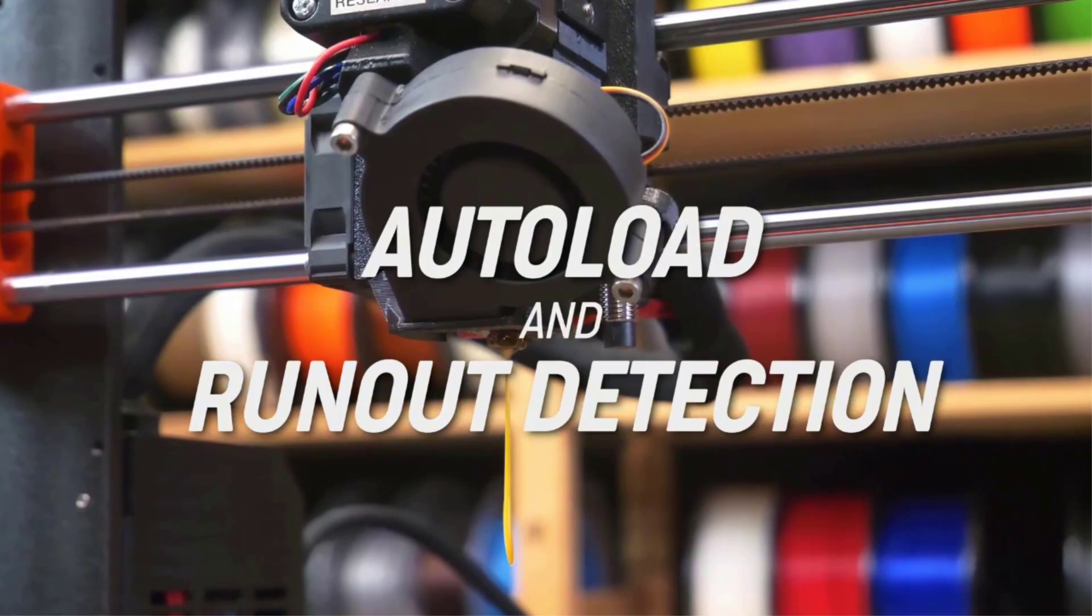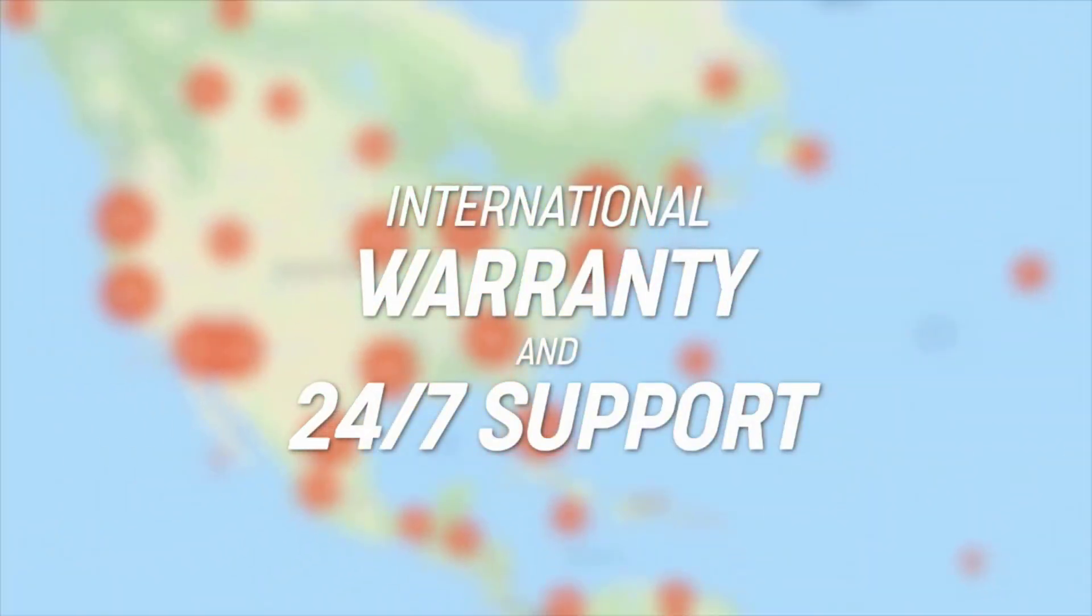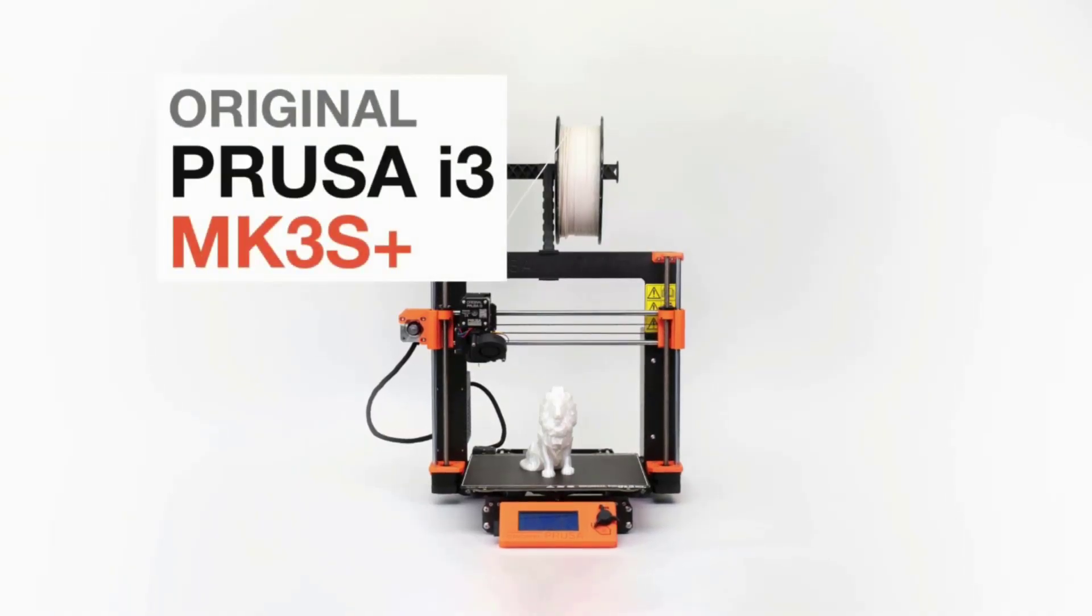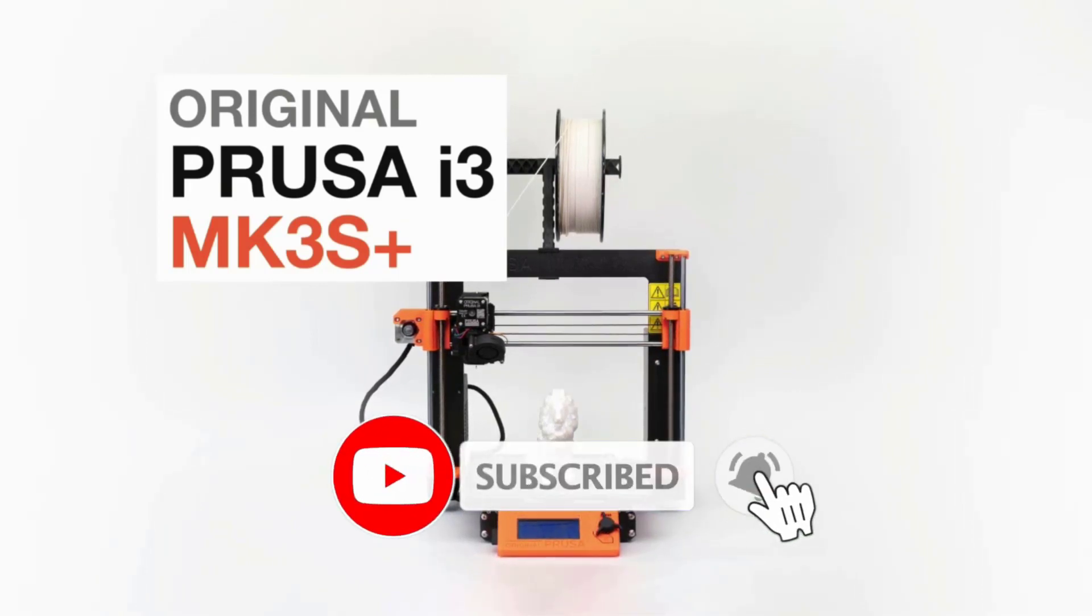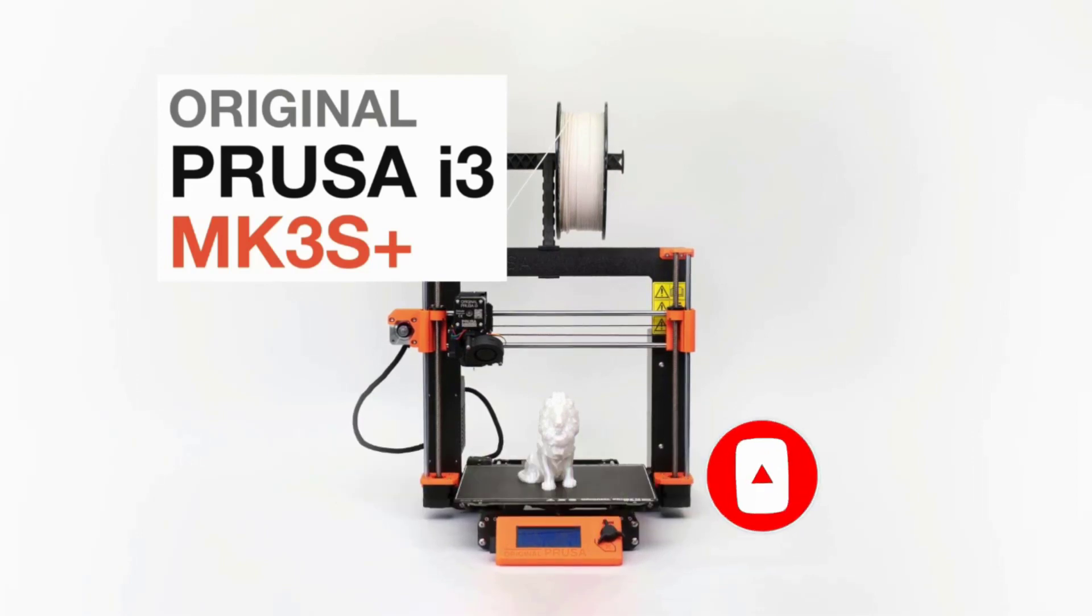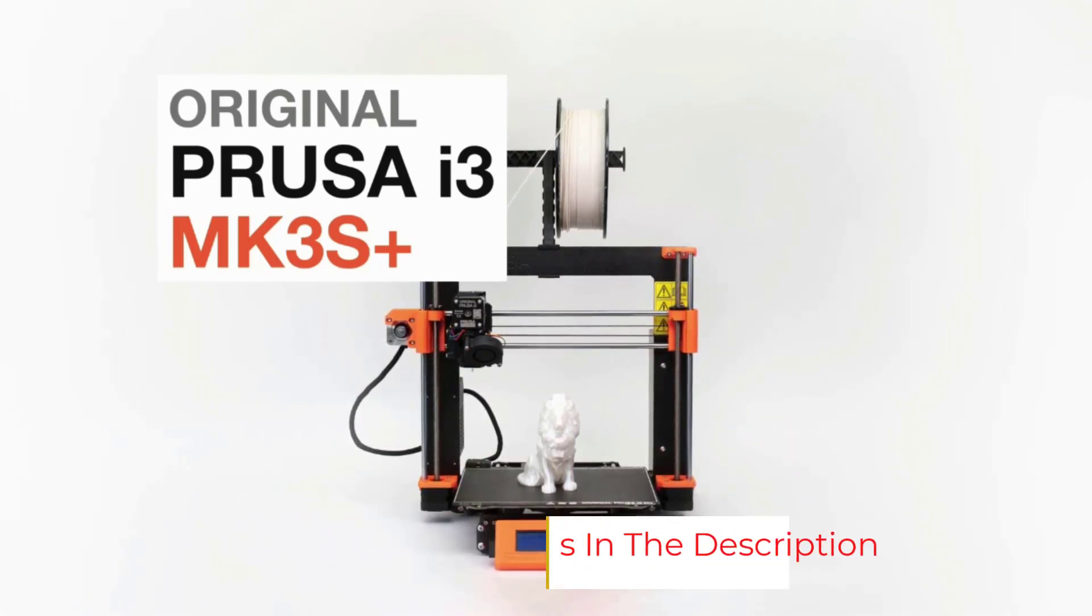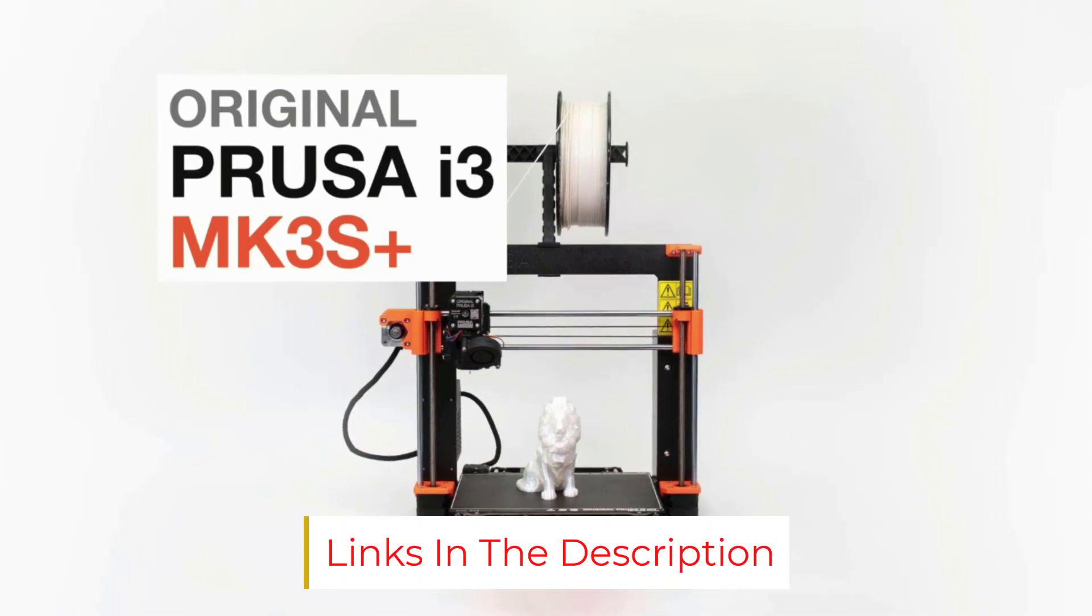The Prusa i3 MK3S+ is a worthy upgrade from the Mini Plus for its 9.9 by 8.3 by 8.3 inch printing area, more stable z-axis, and better extruder. It comes with parts that are likely to last longer, though no color screen is on the Mini Plus, and an upgraded motherboard that can better detect and correct errors while the machine is printing. Its setup is also faster and easier than that of the Mini Plus, notes The Strategist.